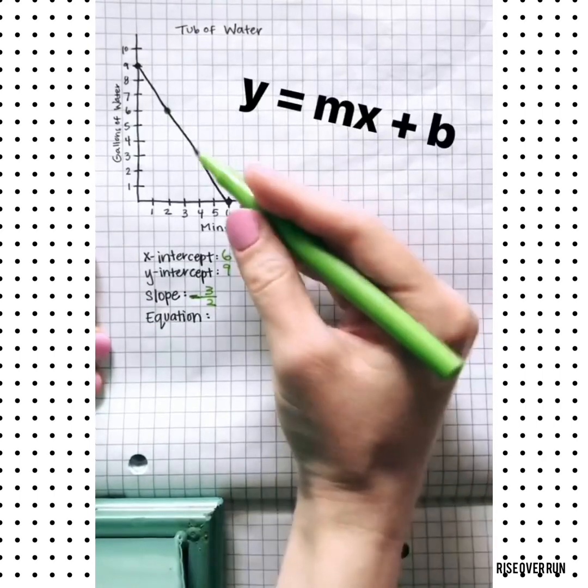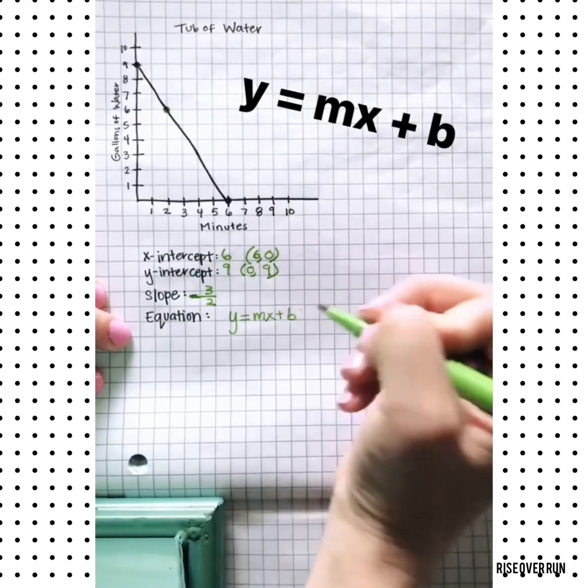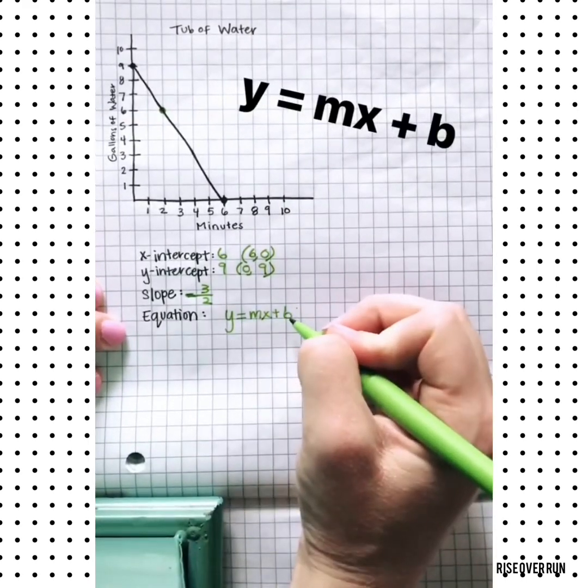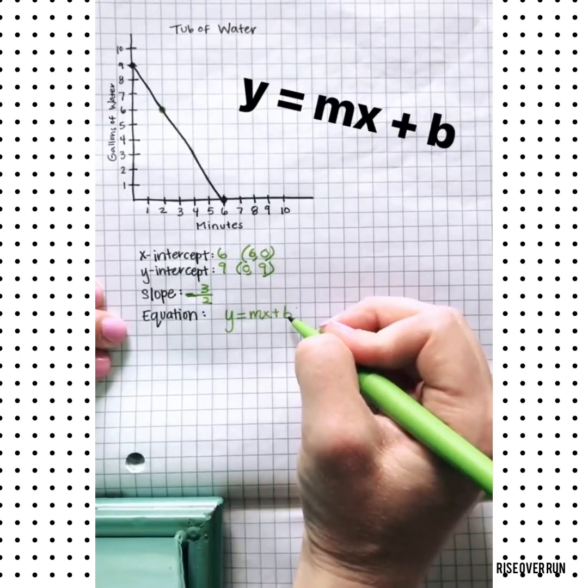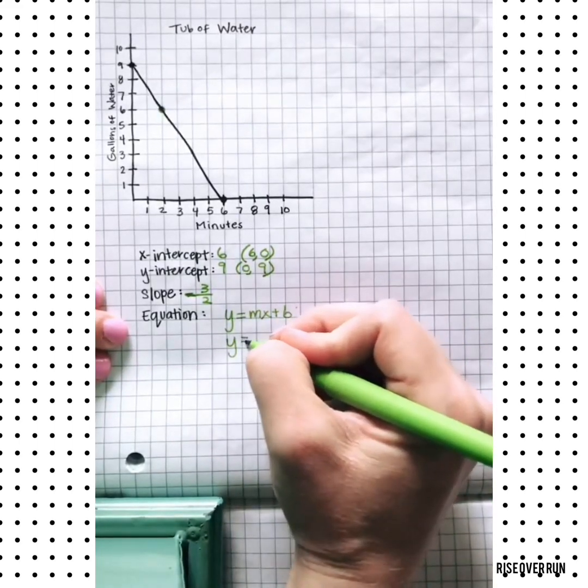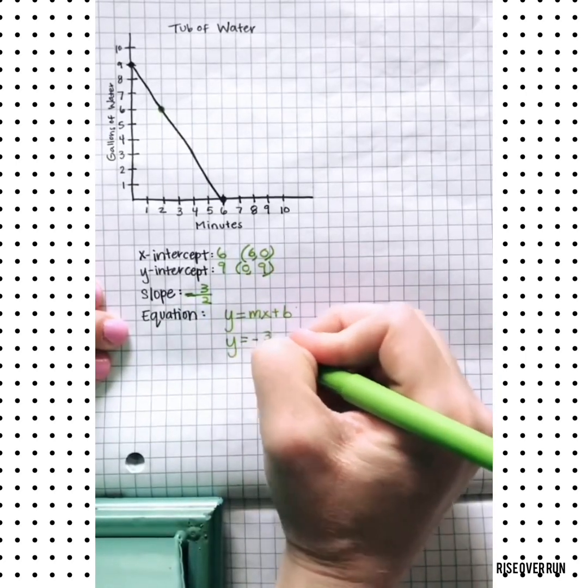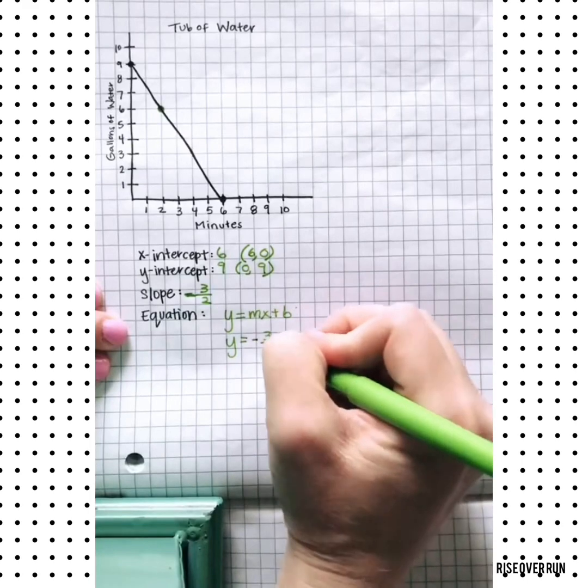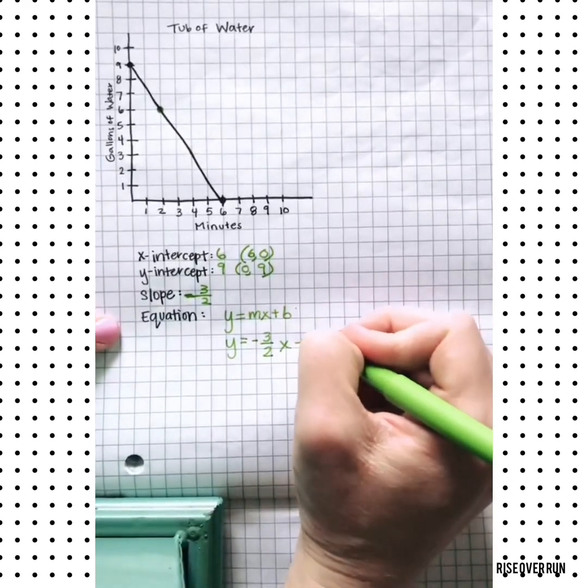To write an equation for this line, we can use the format y equals mx plus b. It's important to know what m and b mean. m is the rate or the slope, b is the y-intercept. So since we've already found these values, we can plug them in. y equals m, that's our negative 3 over 2, x plus b, the initial value, which is 9.